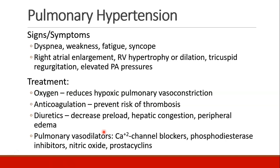When treating patients with pulmonary hypertension, they may require oxygen, which helps reduce hypoxic pulmonary vasoconstriction. Sometimes these patients are anticoagulated to prevent the risk of thrombosis in the pulmonary system. Diuretics can be helpful to decrease preload, hepatic congestion, and peripheral edema. Pulmonary vasodilators are often a mainstay of therapy in patients with severe disease, including calcium channel blockers, phosphodiesterase inhibitors, nitric oxide, and prostacyclins.